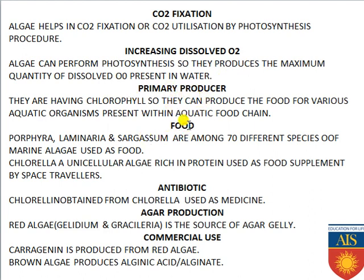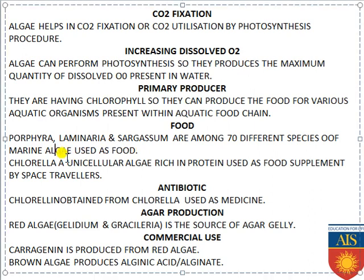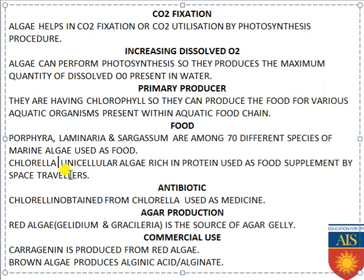Algae can also be used as food. Examples include Porphyra, Laminaria, and Sargassum — among 70 different species of marine algae used as food. Chlorella is a unicellular algae rich in protein used as a food supplement by space travelers, making it an important algae for space travel.